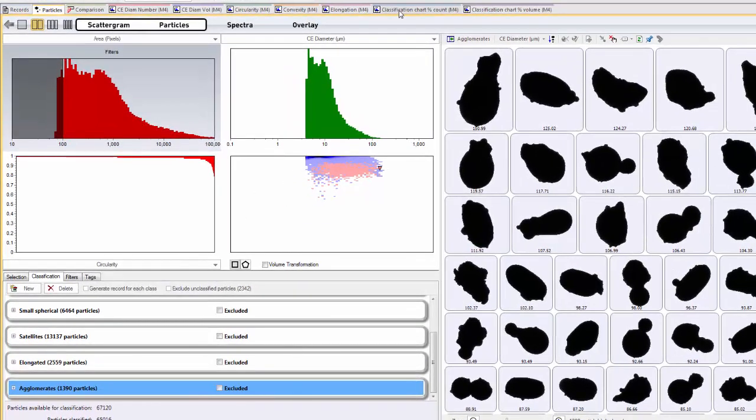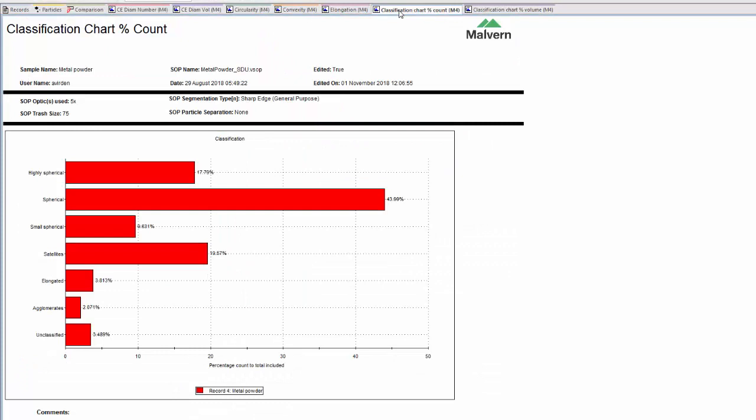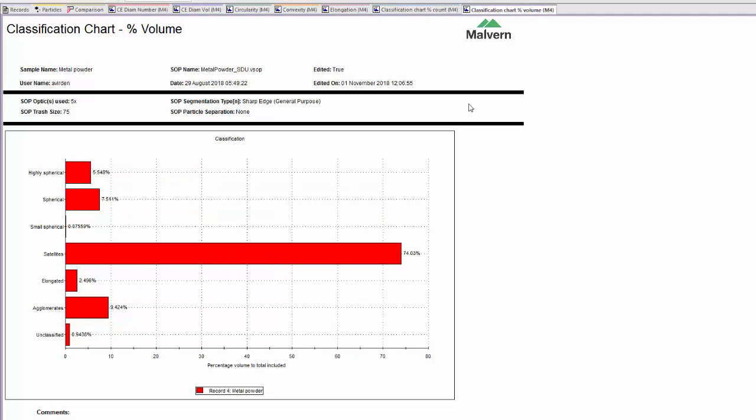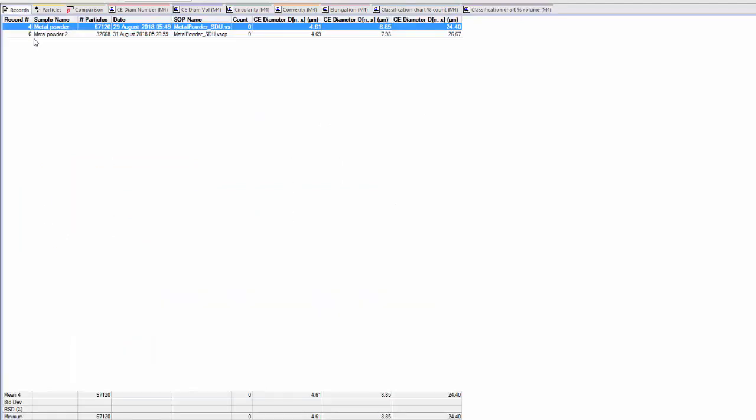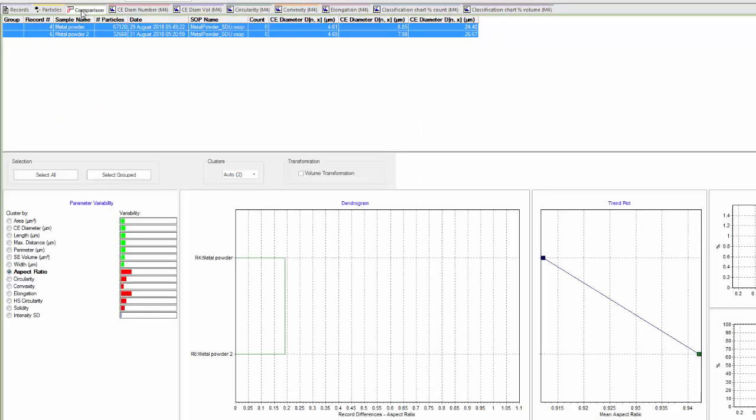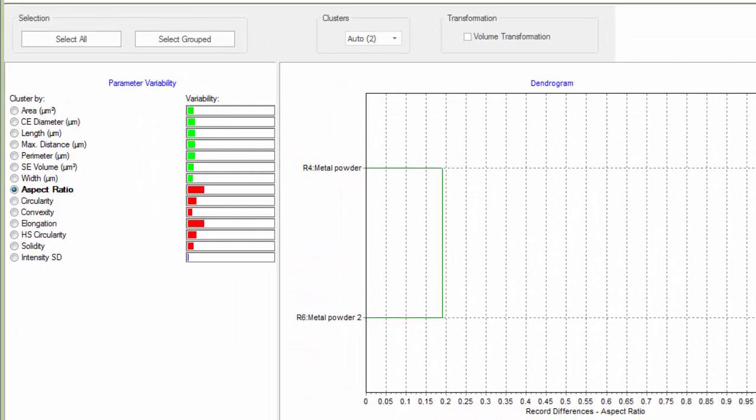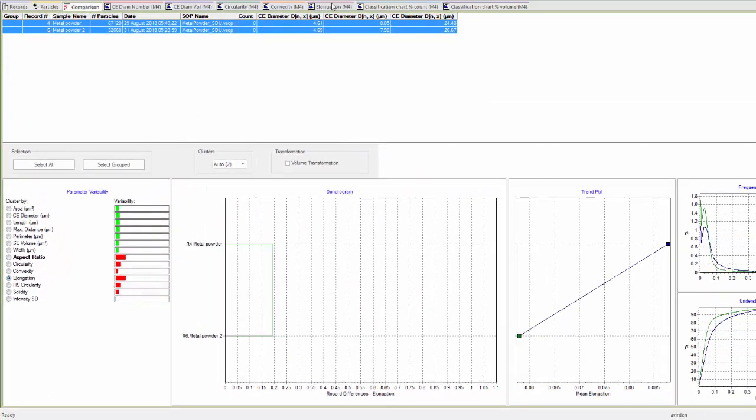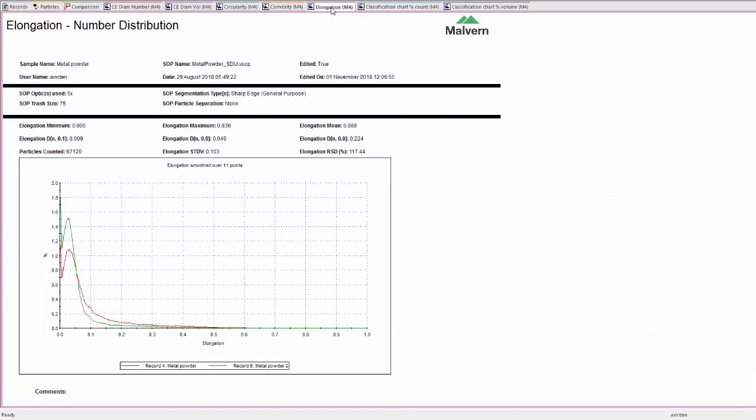Classification charts can then be created in percentage number and percentage volume. When multiple samples are measured, the comparison tool can be used to show the variability of size and shape parameters. Size parameters are displayed in green, shape in red, and intensity in blue. The longer the bar, the greater the difference. Here aspect ratio and elongation show the greatest difference.